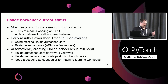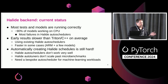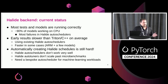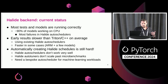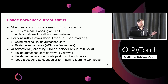So what's the current status — how well does it work? Most models are running correctly; we're passing around 90% of models on the CPU. Most of the remaining failures are in the Halide autoschedulers. The early results show that it's slower than Triton or C++ on average, so you're not going to get a big speedup from that. But on some cases, especially on ARM, we're seeing some speedups.